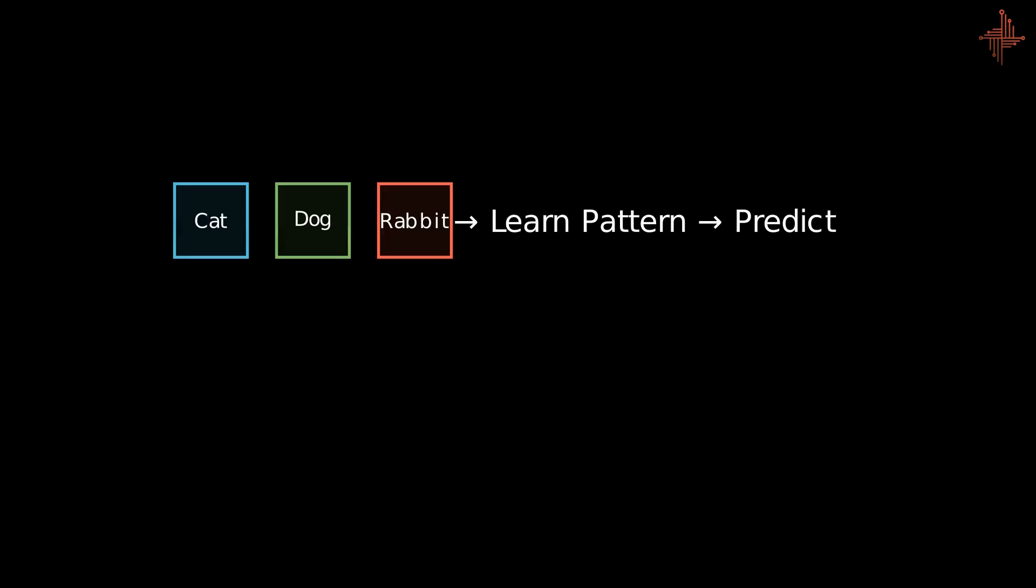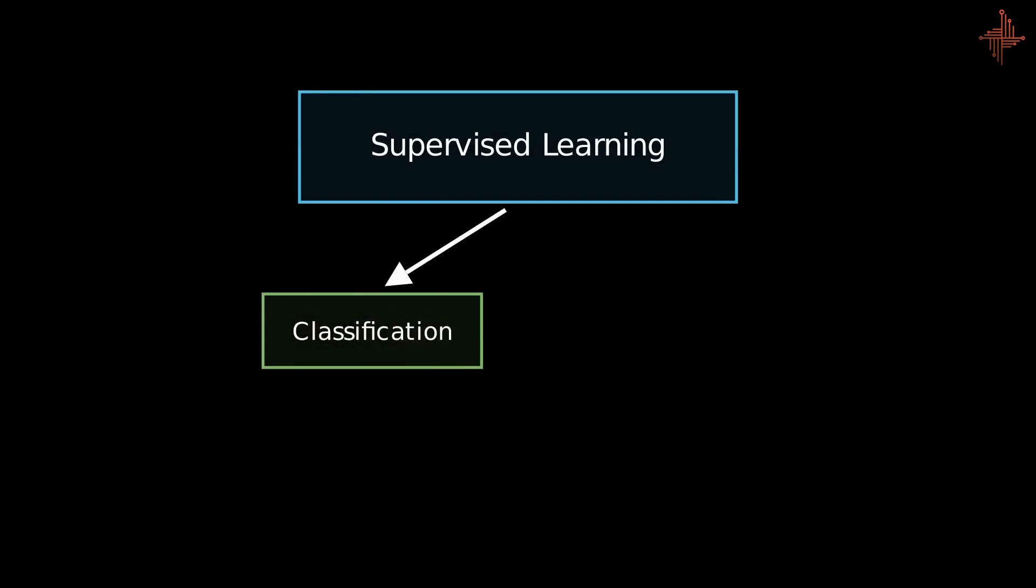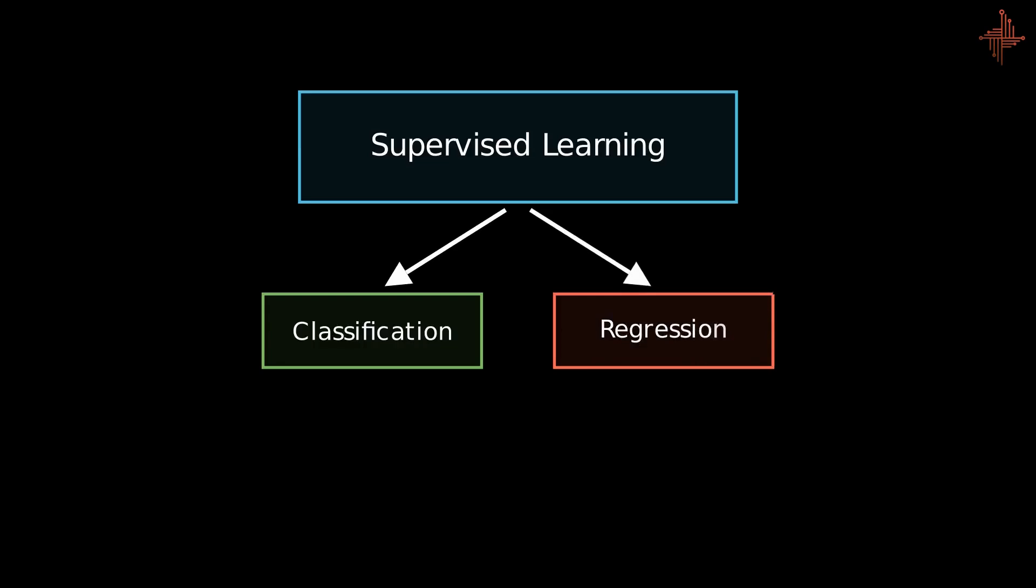So when you later present it with unlabeled data, or just the input, it can infer the correct output based on the patterns it has learned. When we first start with machine learning we start with supervised learning. It is of two types or basically it can solve two types of problems: classification and regression. We will dive deeper into both of them in upcoming videos.